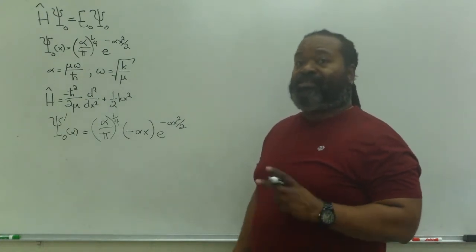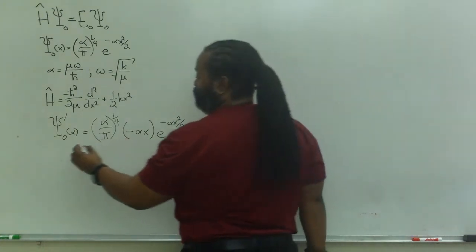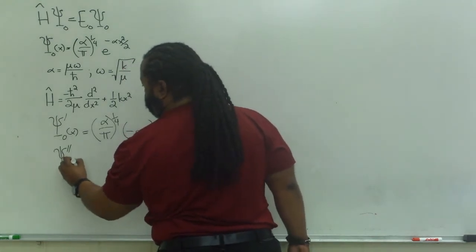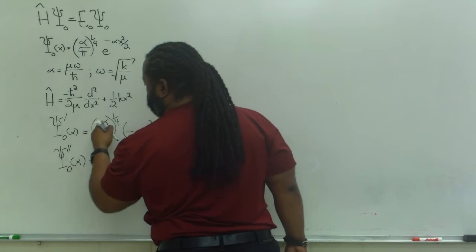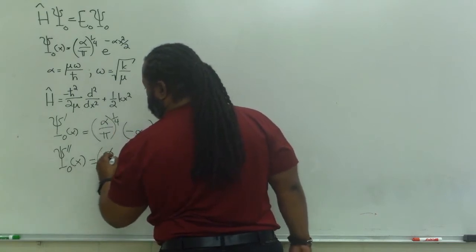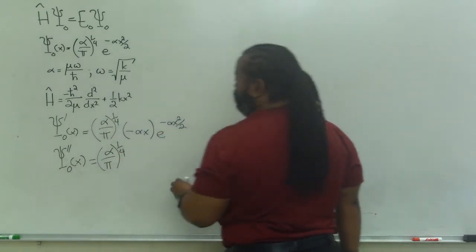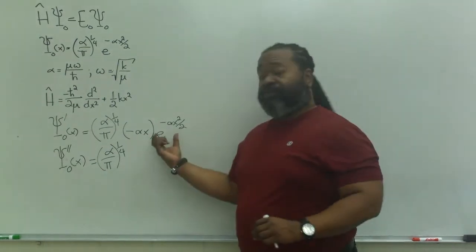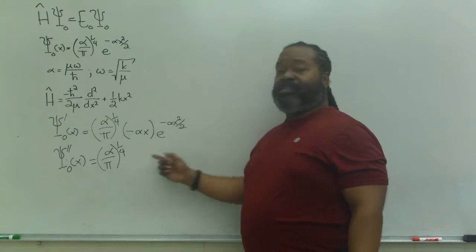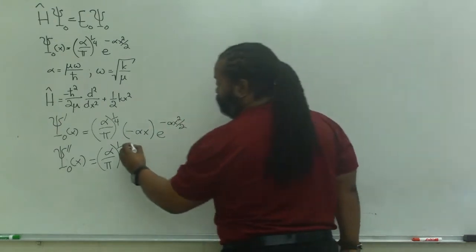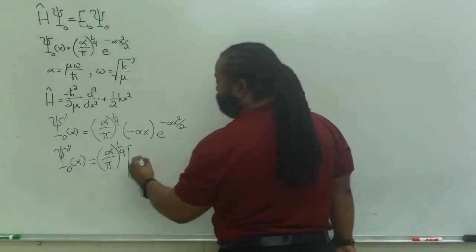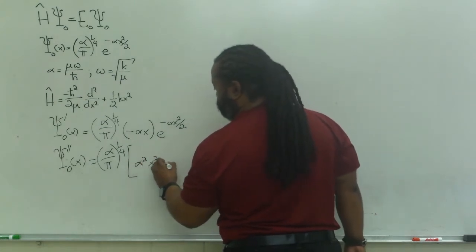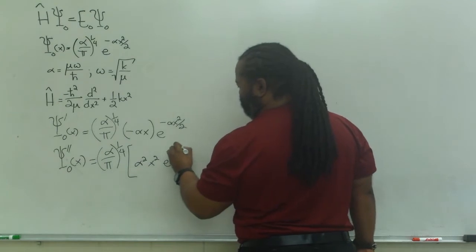Now, to get the second derivative, I'll need to apply the product rule here, but it's all pretty straightforward. So, the second derivative: this constant comes out, it stays put. And now I want to do the first times derivative of the second. Well, the derivative of the second term is this entire thing. So, a minus alpha x times itself will give me a positive alpha squared x squared times the exponential.